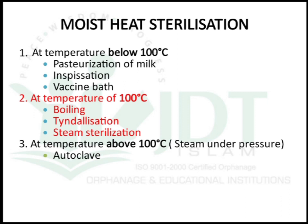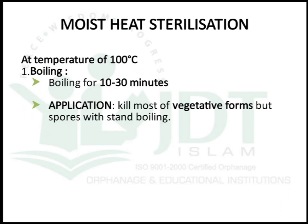Now, at 100°C, the first method is boiling. The substance to be sterilized, such as liquid media or liquid solution, is boiled for 10 to 30 minutes. This can be used for sterilization of items containing vegetative forms. However, spore-forming microorganisms will withstand boiling and are resistant to it.